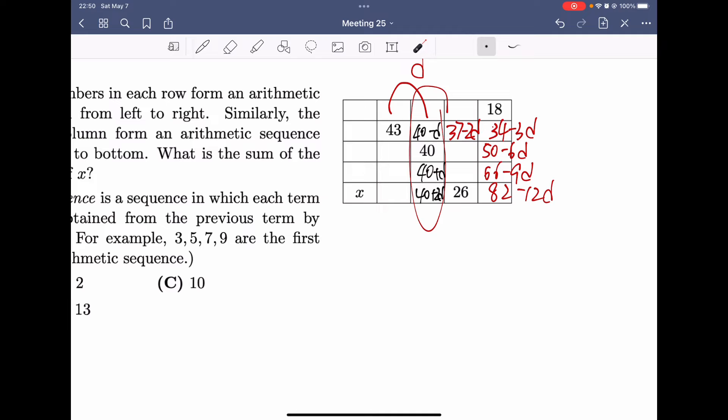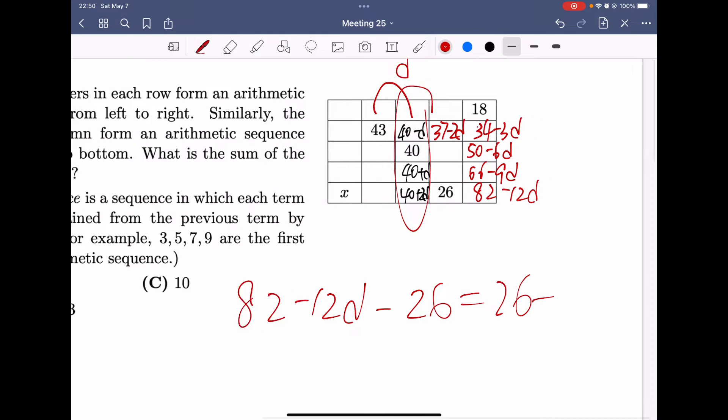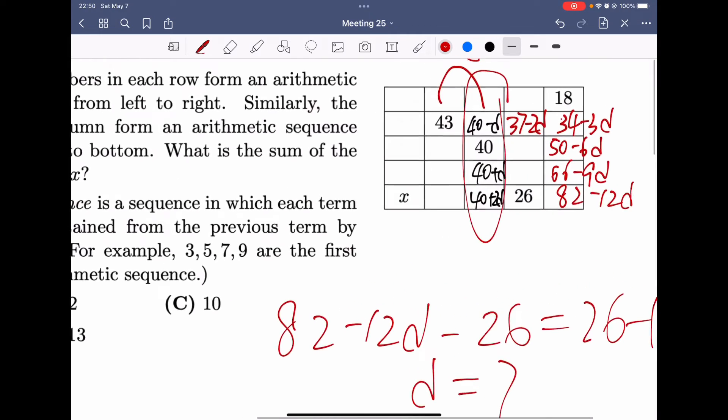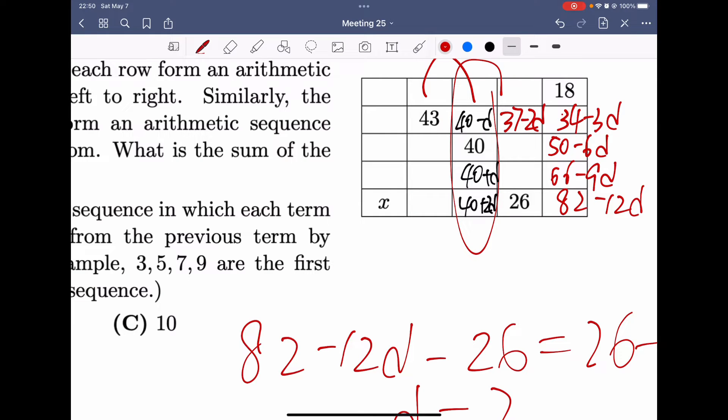Okay, now we have these three consecutive terms in a row, which is supposed to be forming an arithmetic sequence. So, therefore, we can write out this equation, which is 82 minus 12D minus 26 equals 26 minus 40 plus 2D. And solve this equation, we get D, and then we substitute D into the table, and here, there should be 54.